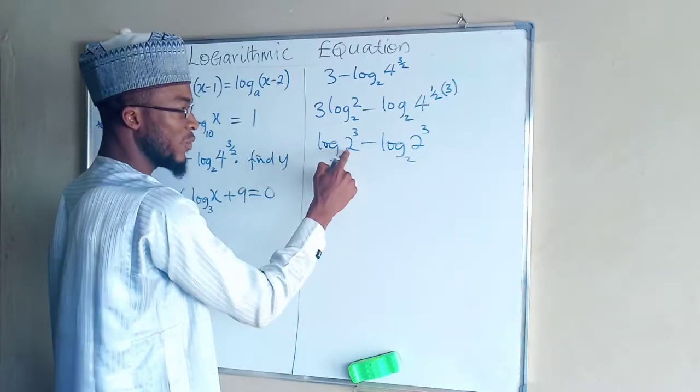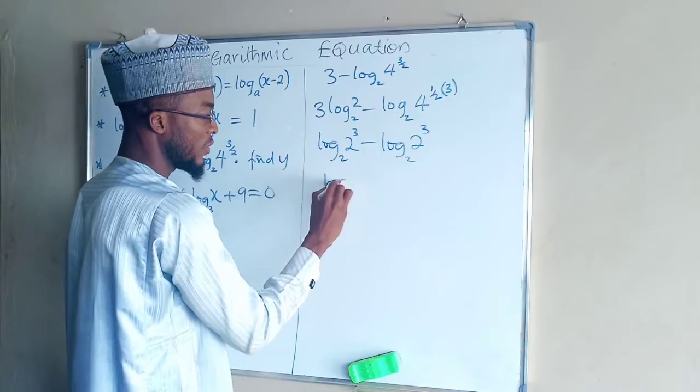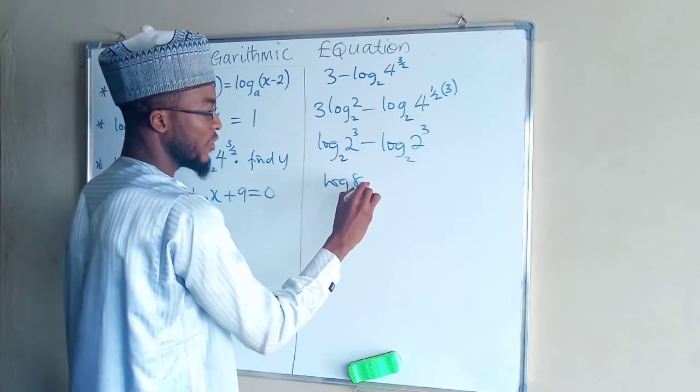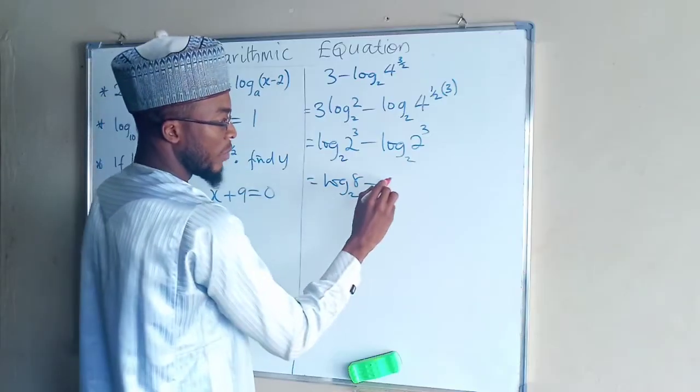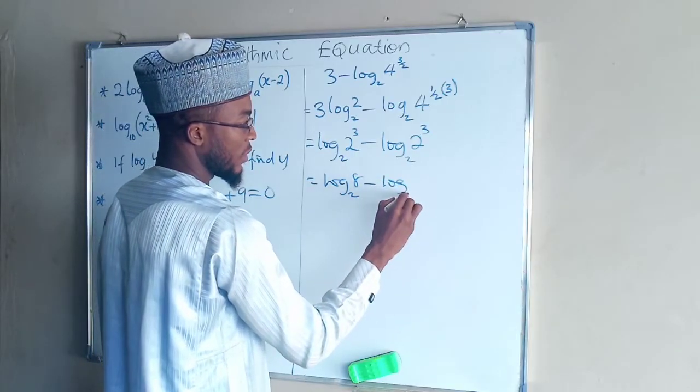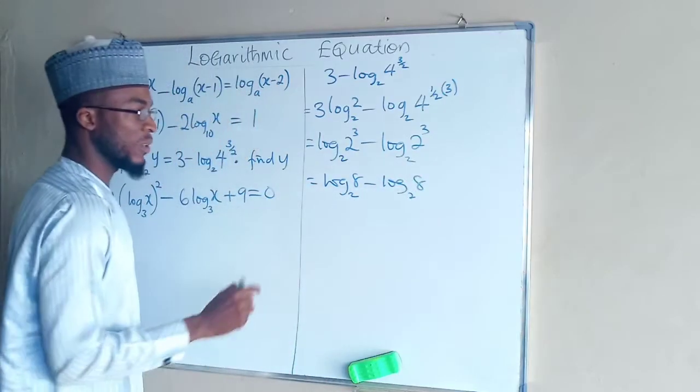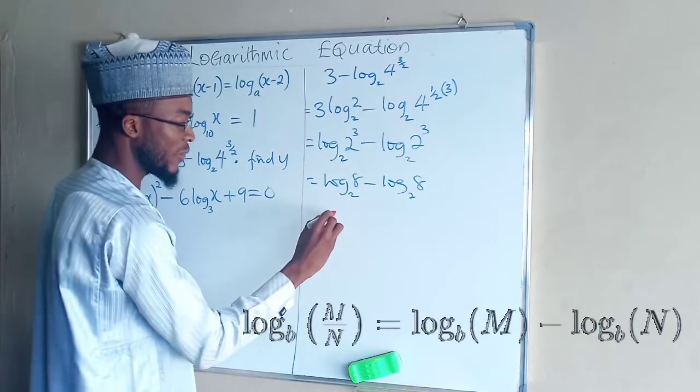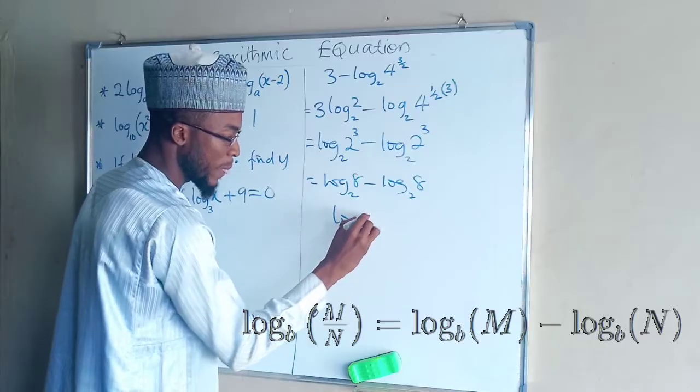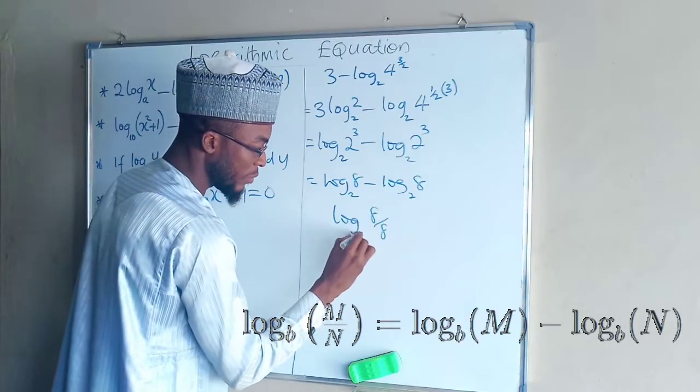And again this 2 power 3 is 8, so log 8 base 2 minus log 8 base 2. Then if you change them so they will have the same log, you have log 8 divided by 8 base 2.